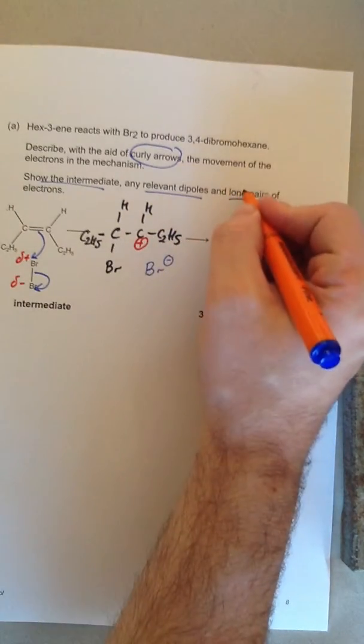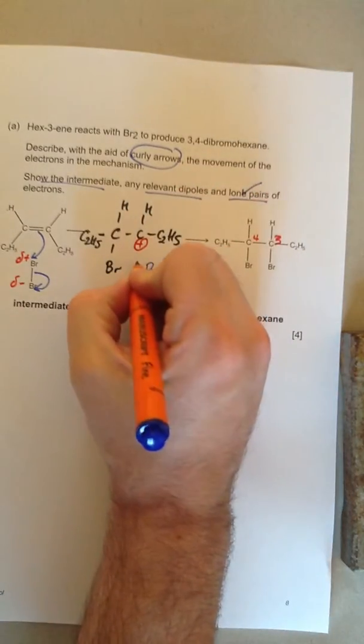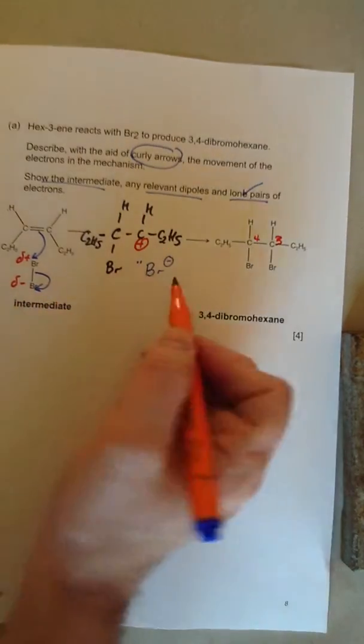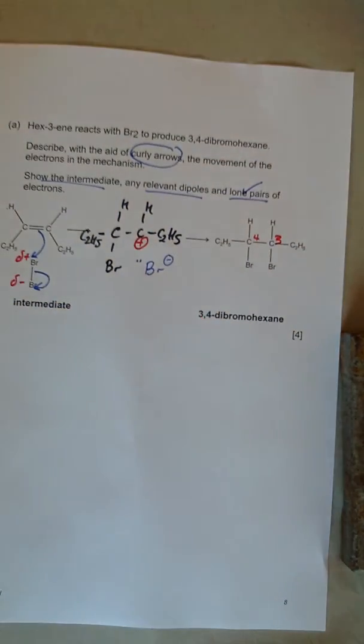And it says show lone pairs. So it's going to have a lone pair. Both of the electrons from that bond have gone to make that lone pair there. Does that make sense?